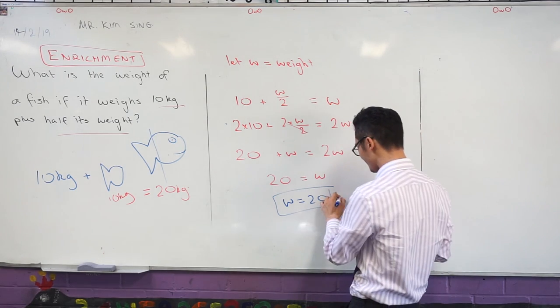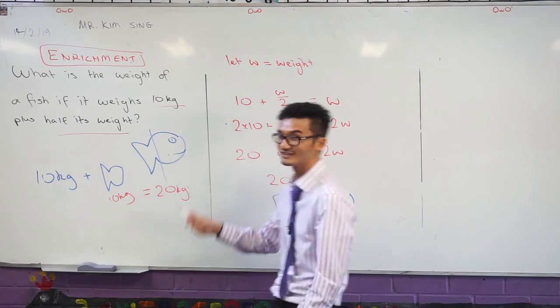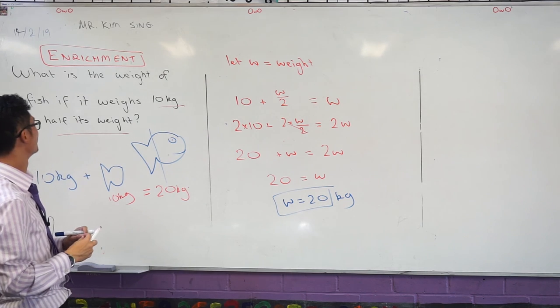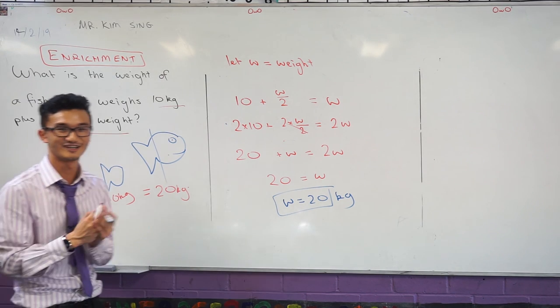20 kilos. So a few different ways we can approach this question. Either way, that's how we can find the weight of a fish if it weighs 10 kilos plus half its weight.